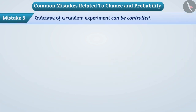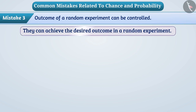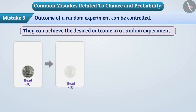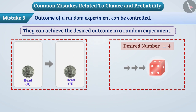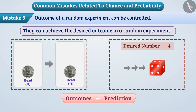Mistake 3: Outcome of a random experiment can be controlled. Some children make the assumption that they can achieve the desired outcome in a random experiment. For example, they think that if they keep the head on top and toss the coin, they can get the desired outcome. Similarly, they think if a dice is thrown with a specific force, the desired number can be obtained. Remember, in the context of a fair dice, the result cannot be controlled, so the outcome cannot be predicted precisely.